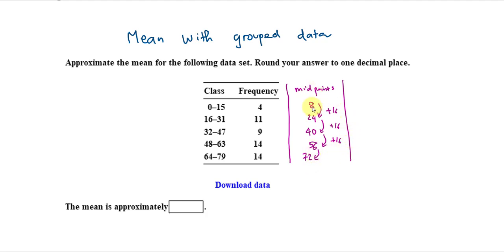Now, after we get the midpoint, all we do is multiply each midpoint with the frequency, because this is the number of times the data occurs inside this class interval. So, we take the midpoint and multiply with the frequency.